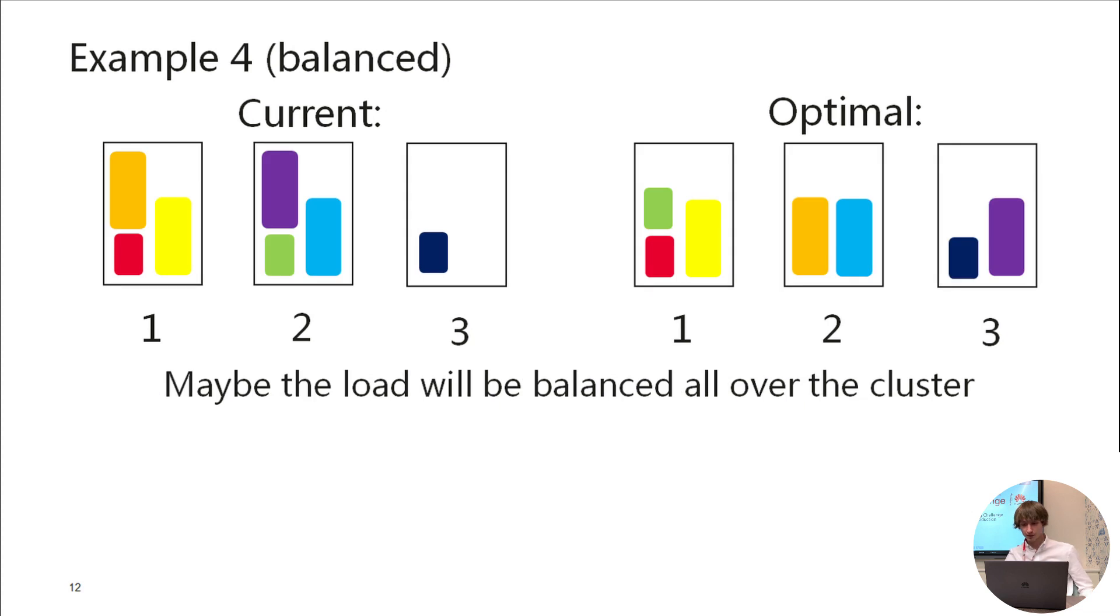Example 4 is a different situation. Virtual machines are scattered across the cluster. And you can see that the load of each server is almost the same. This is, we called, balanced input.